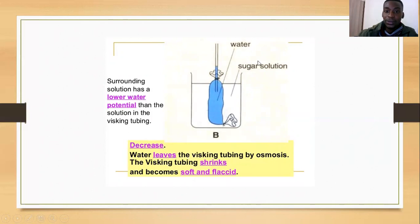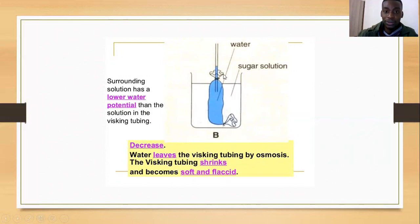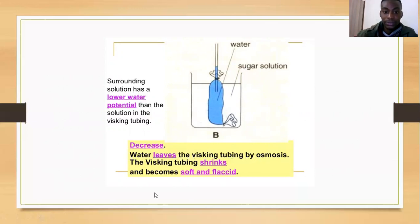Now analyzing the reverse experiment: the osmotically active particles — glucose — are inside the beaker. They will draw water from the visking tube into the beaker. So water moves from the visking tube to the beaker: the water level in the glass tube reduces and the water level in the beaker increases. Water leaves the visking tube by osmosis because the sugar molecules have a higher osmolarity and pull water towards themselves. The visking tube shrinks and becomes soft and flaccid.